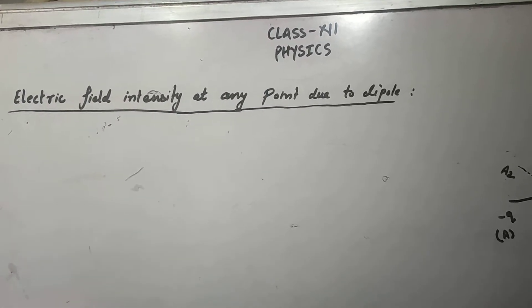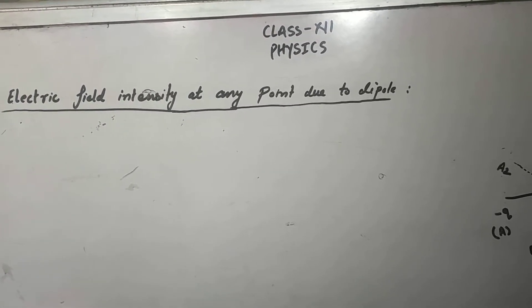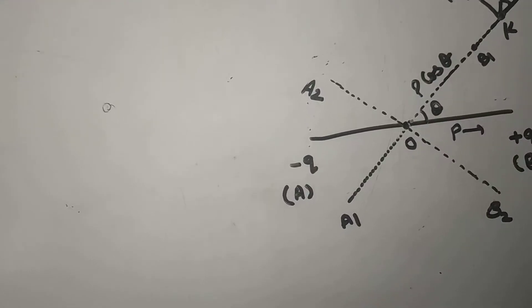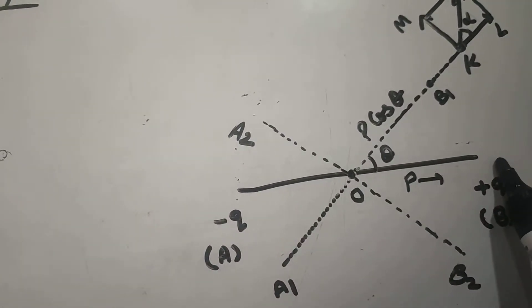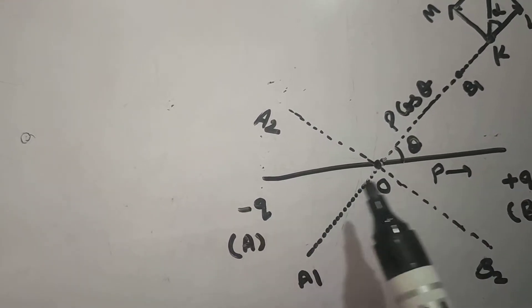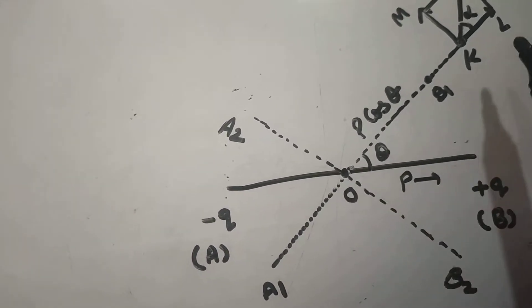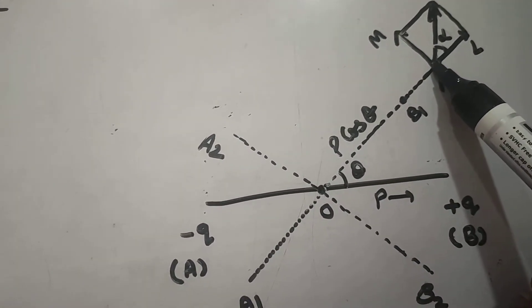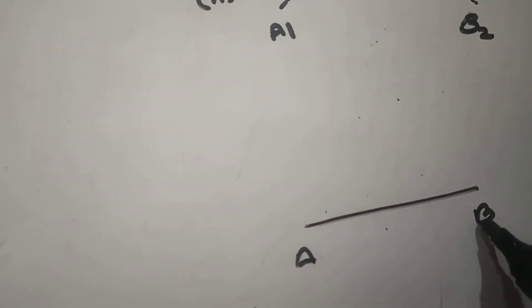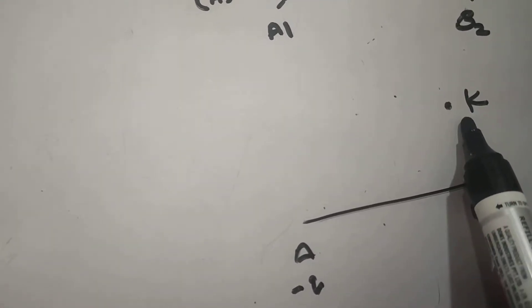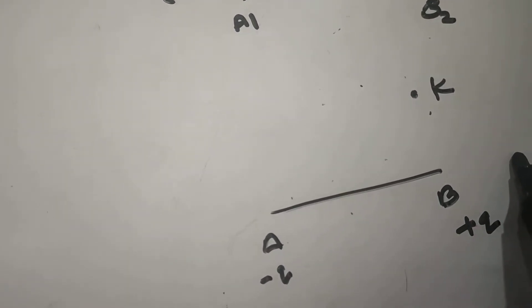Our next topic is electric field intensity at any point due to a dipole. Here A and B is an electric dipole having charges minus Q and plus Q. O is the center of the dipole, and we have to find the field intensity at point K, which is not lying on the axial line of the dipole and also not lying on the equatorial line.